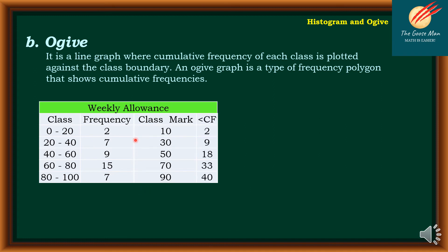Next, we get the less than cumulative frequency. The first cumulative frequency is just the first frequency itself. Then: 2 plus 7 equals 9; 9 plus 9 equals 18; 18 plus 15 gives us 33; and 33 plus 7 equals 40. Notice that your total cumulative frequency is equal to your total frequency.